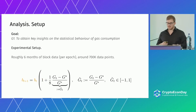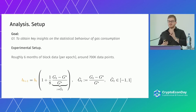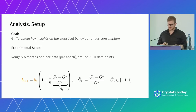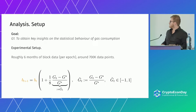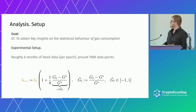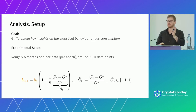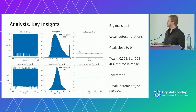So let's move on to the analysis. The first goal was to obtain key insights on the statistical behavior of gas consumption. As an experimental setup, we looked at and analyzed roughly six months of blockchain data on an epoch-by-epoch basis, which is around 700,000 data points, each containing several features. Instead of looking directly at gas usage g_t, we looked at a normalized gas usage — the gas usage minus the target gas, divided by the target gas — which is more convenient as this value takes values between negative one and one. When g̃(t) is close to negative one, blocks were very empty; close to zero means near the target gas; and close to one means blocks were quite full at that epoch.